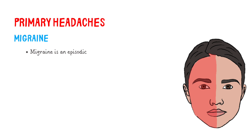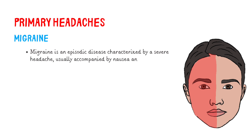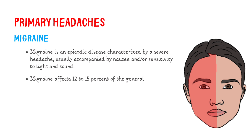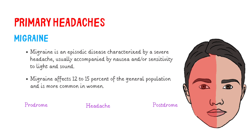Migraine is an episodic disease characterized by a severe headache, usually accompanied by nausea and/or sensitivity to light and sound. Migraine affects 12–15% of the general population and is more common in women. Migraine pain can make you unable to do your daily work. A typical migraine attack has three phases: prodrome, headache, and postdrome. About a quarter of migraine patients also experience a fourth phase called aura.